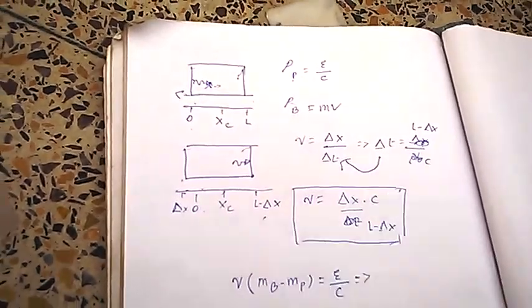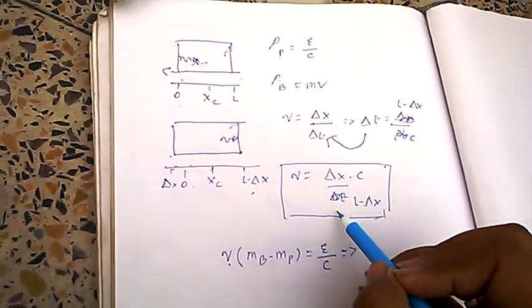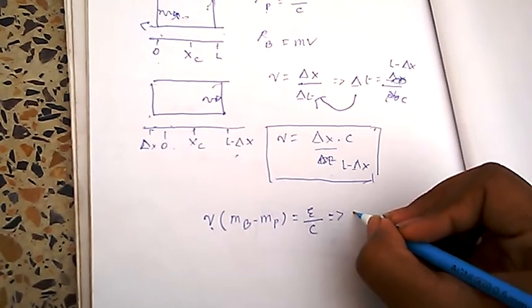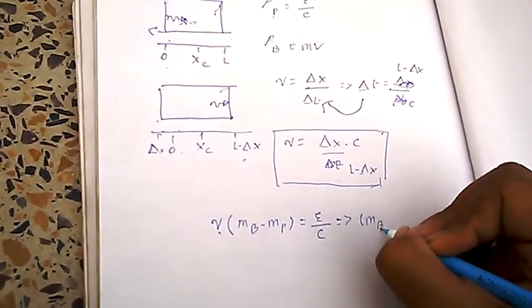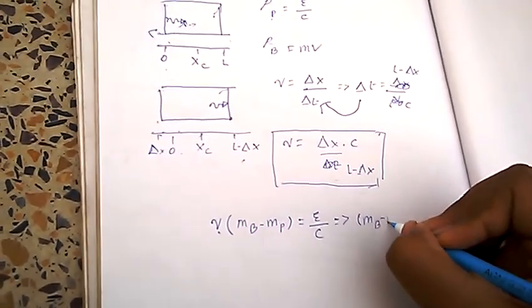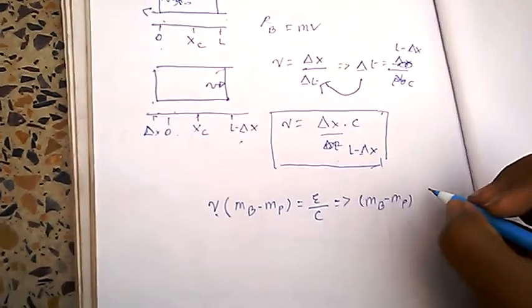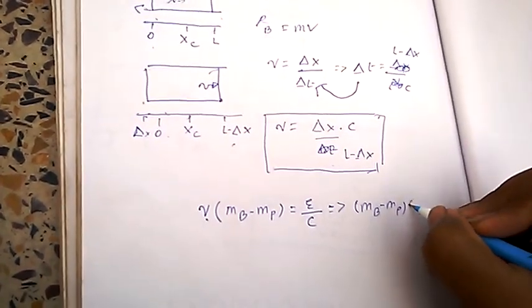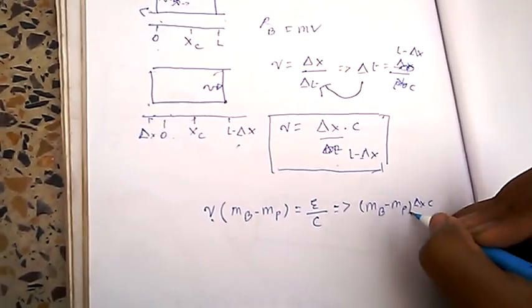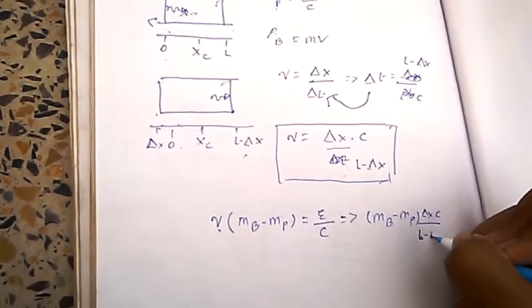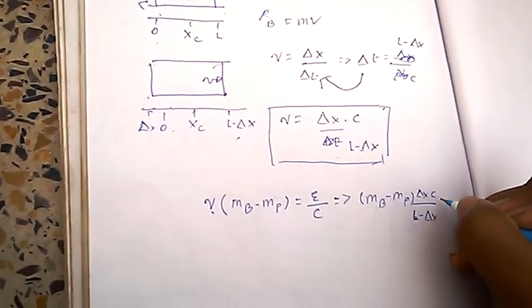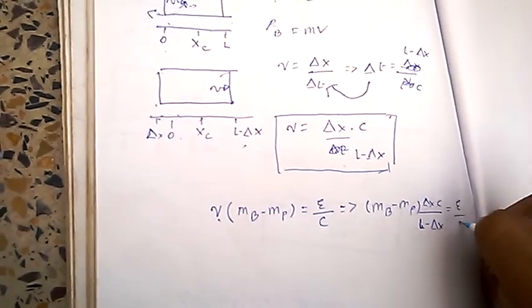So, the pressure velocity will be replaced, this one, is mass of box minus mass of photon, into delta x C by L minus delta x equals to E by C.